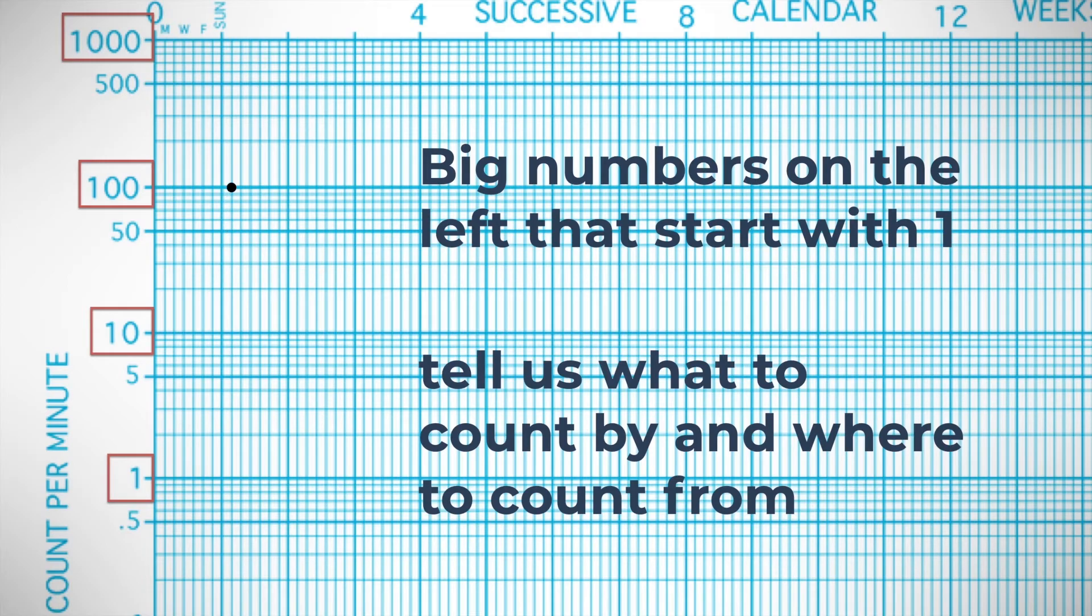Now you guessed it: big number on the left that starts with one is 100, so we're going to be counting by hundreds from 100. So this frequency is 200 per minute, this is a behavior occurring 300 times per minute, 400 per minute, 500, 600, 700, 800, 900, 1000.